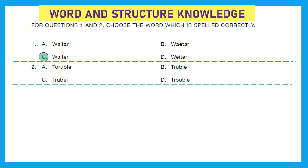Question 2: looking at the options it looks like they're talking about 'trouble,' which means a difficulty or problem. The right spelling is option D: T-R-O-U-B-L-E, trouble.